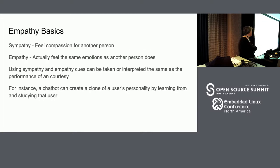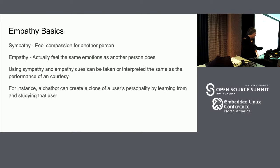It's also important to have empathy. Sympathy is about feeling compassion for another person; empathy is about actually feeling the same emotions. Using these cues in a game can be perceived as an actual caring action rather than just a performance — the brain processes a character doing something for you as an actual courtesy being done to you. An example would be a chatbot that uses a user's personality and mimics that user by learning and studying from them.